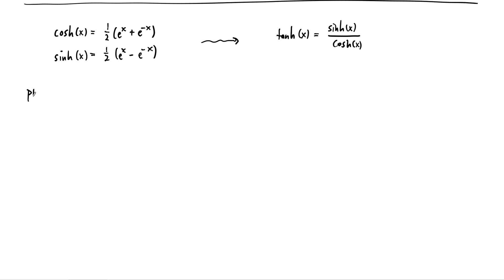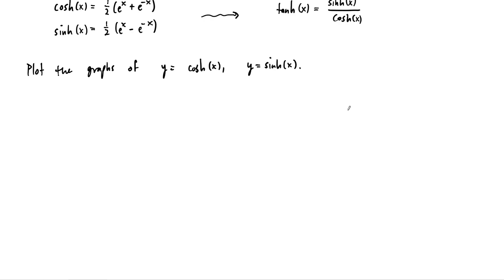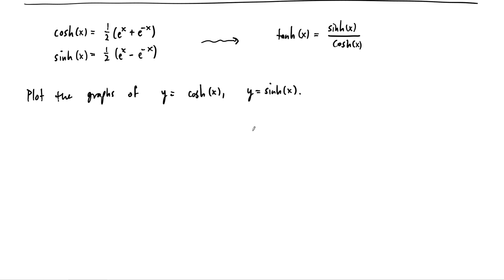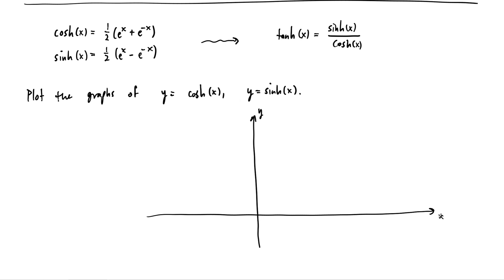Now I want to plot the graphs of y equals cosh of x and y equals sinh of x. These two functions are built out of building block functions e to the x and e to the minus x. Distributing the one-half: one-half e to the x and one-half e to the minus x both go through a height of one-half. One-half e to the x has a graph that looks like a standard exponential, and one-half e to the minus x is the same shape but reflected.